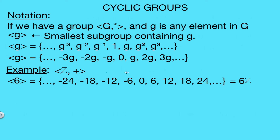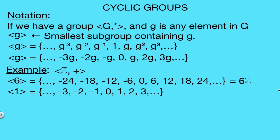So 6 is a generator for this cyclic subgroup. But is the original group — the set of integers — itself cyclic? Can we find an integer that generates the entire set of integers? The answer is yes. Looking at the element 1: repeatedly adding 1 to itself gives 1, 2, 3, and all positive integers. Repeatedly adding negative 1 gives 0, negative 1, negative 2, negative 3, and so on, giving us the entire set of integers. So 1 is a generator for the integers with addition, and therefore this group is cyclic.